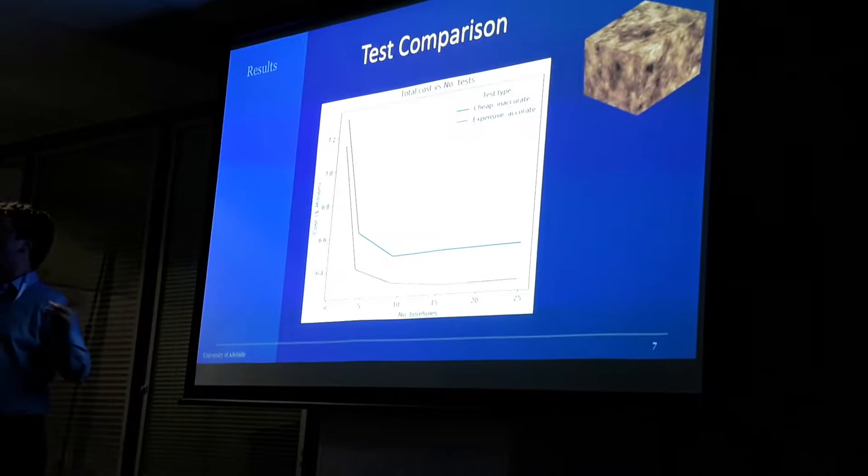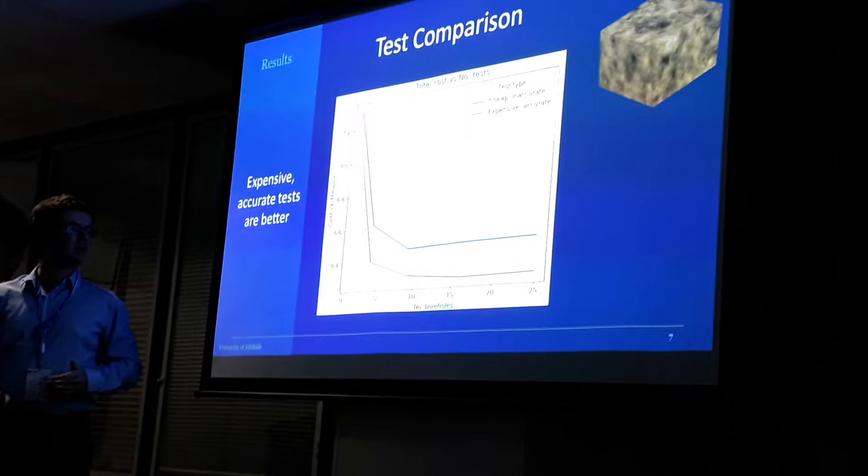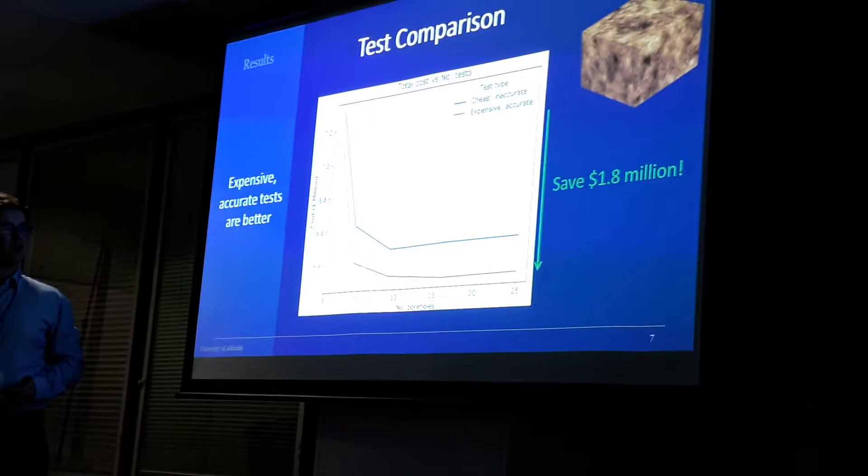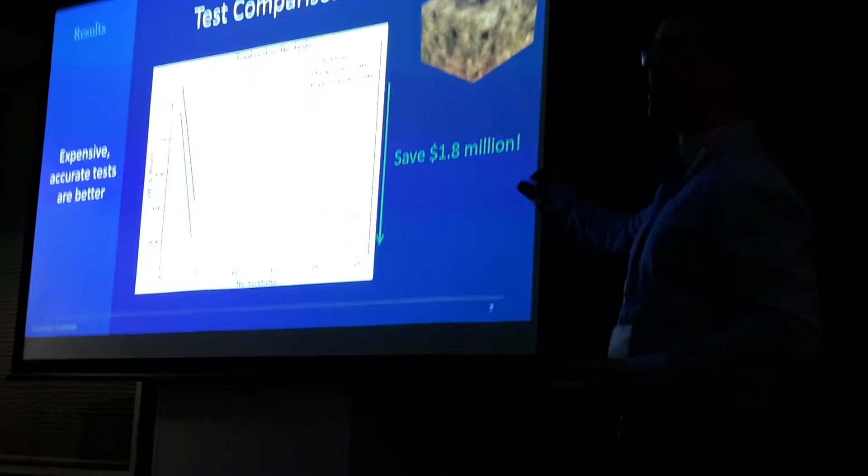The first is that the more accurate test actually performs better. It actually saves you money, despite being more expensive. And the second observation is that you can save up to $1.8 million by doing, say, 16 boreholes instead of one. So just process that for a second. You're doing a larger initial investment, and yet you're actually resulting in a net savings of $1.8 million. What's not to love about that?